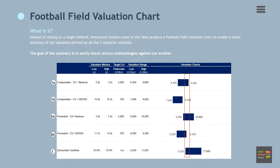The football chart is prepared using a floating bar chart in Excel and summarizes a range of values for a company, based on different valuation methodologies and assumptions. The left-hand side vertical axis, or the Y-axis, lists the different valuation methods used by an investment banker to value a company. Here, the banker has used three different valuation methods for this purpose.